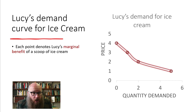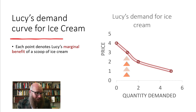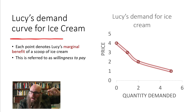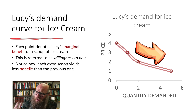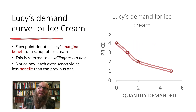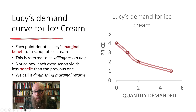Connect all the dots — each dot denotes Lucy's marginal benefit of an additional scoop of ice cream. That first scoop gives her $3 of marginal benefit; that second scoop gives $2 of marginal benefit. The height of this demand curve is her willingness to pay. Notice each additional scoop yields less and less benefit — your stomach gets full, at some point you'll start to feel sick, and there are other things you could do with that money, such as ride a pony or play Ninja Turtles at the arcade. We call this downward slope diminishing marginal returns.